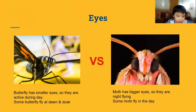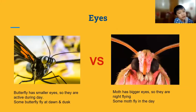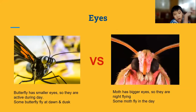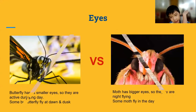Butterflies have smaller eyes, so they are active during the day. Some butterflies also fly at dawn and dusk. Moths have bigger eyes, so they are mainly active at night. Some moths do fly in the day.